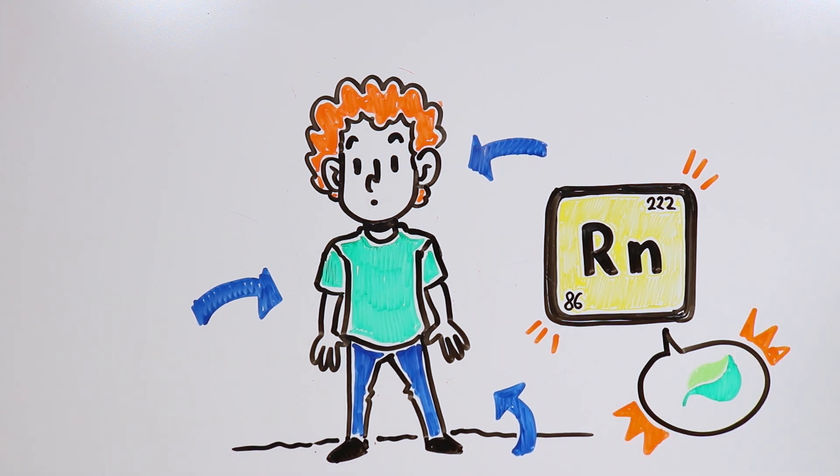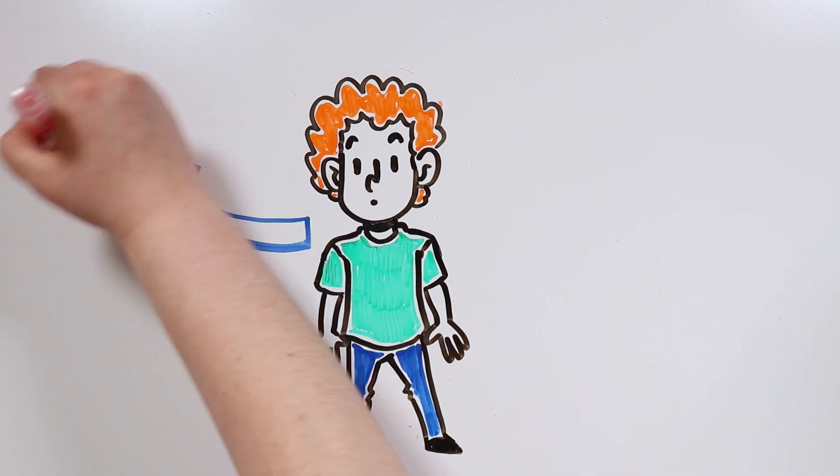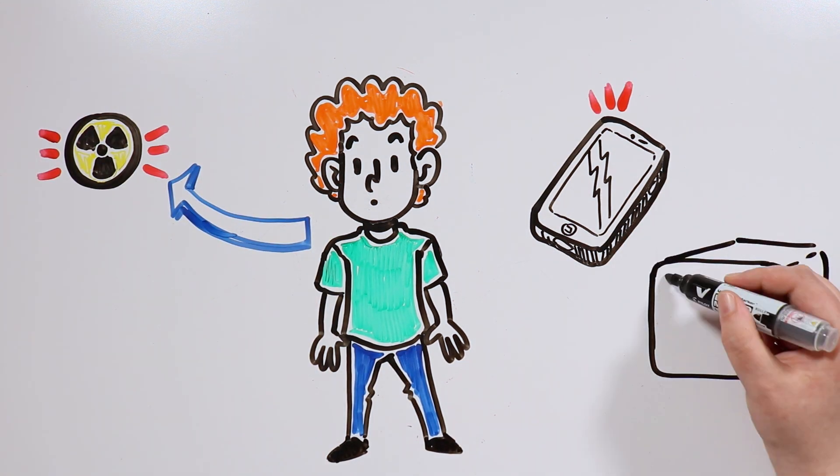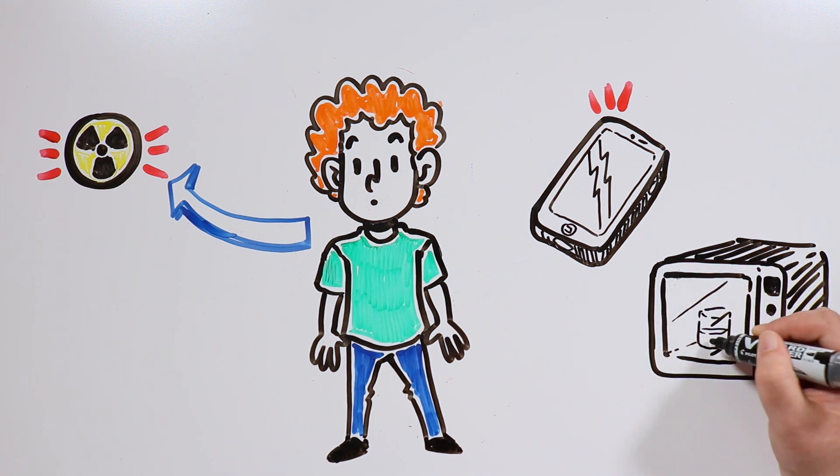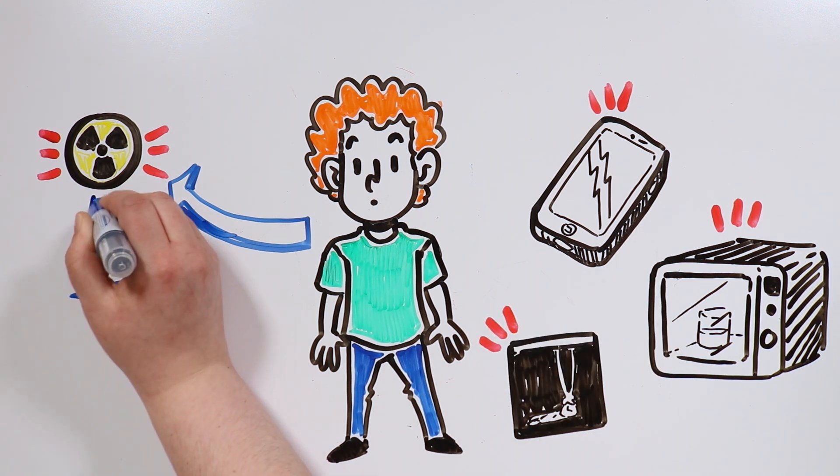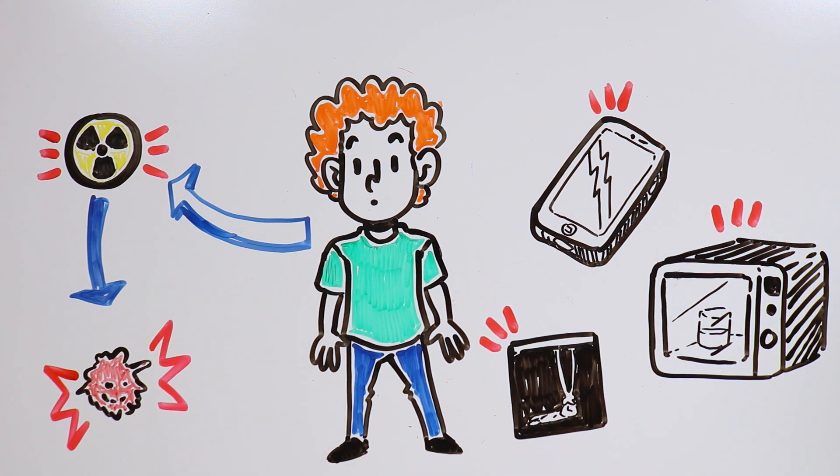These are natural sources of radiation, although human scientists have also created artificial sources. We use that artificial radiation when we talk on our cell phones, when we heat up our breakfast in the microwave, or when our doctor takes an X-ray of us. Moreover, radiation is also used to eliminate cancerous tumors.